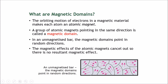For example, this group of atomic magnets all pointing in the same direction — this part over here is called a magnetic domain. Now in an unmagnetized bar, the magnetic domains point in random directions. No one has guided them on where to point, so some point this way, some point that way — they all just point in different directions.